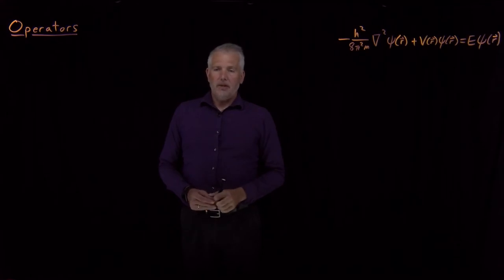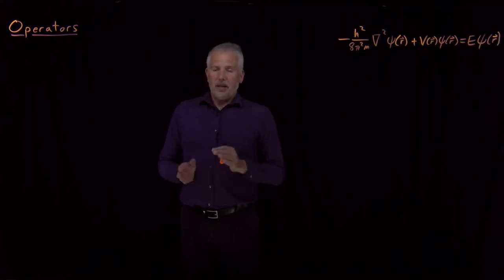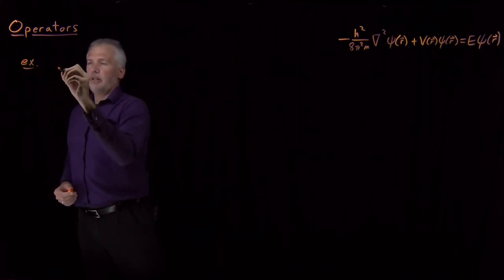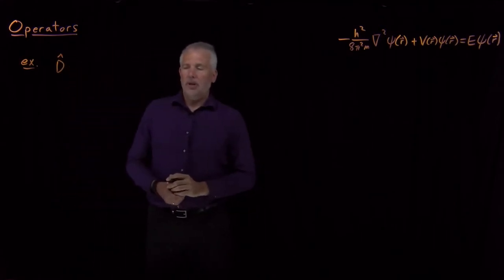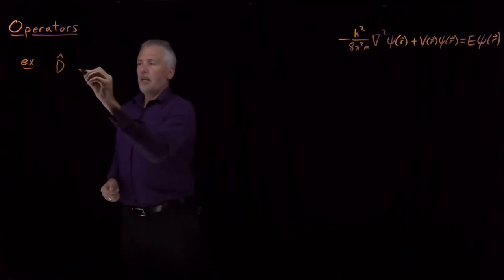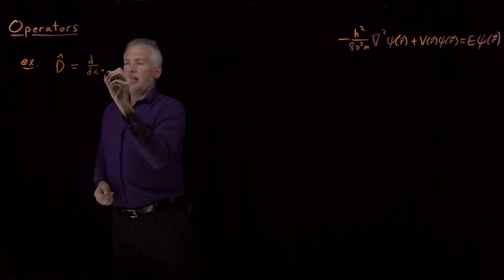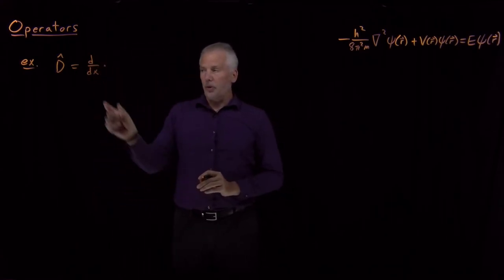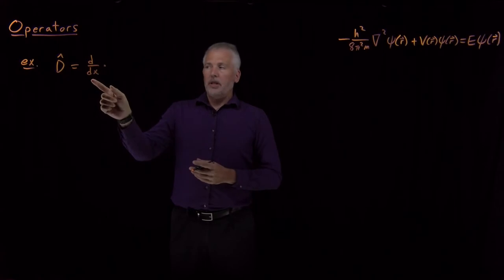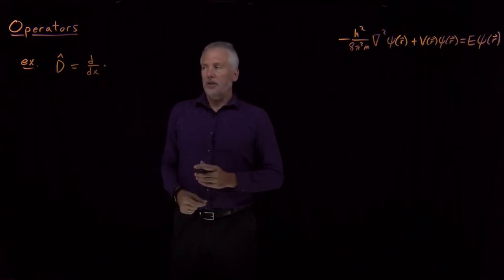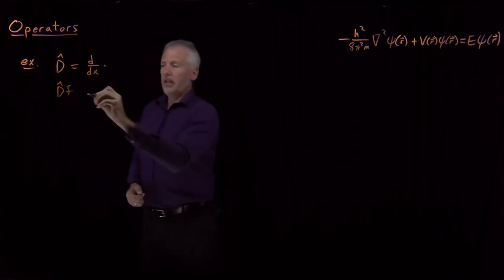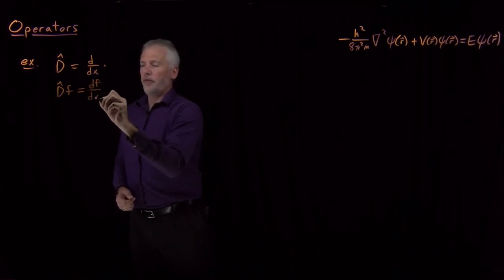An operator is just a mathematical action that acts upon something else — operates upon something else. For example, I can define an operator. I'll call it the D operator, and we'll often use a hat to describe an operator, so D-hat means the operator called D. This operator D is the take-the-first-derivative operator. A derivative is an action that doesn't mean anything by itself — I can't tell you what the derivative is until you tell me what you want to take the derivative of. So it acts upon some function, and the derivative operator acting on some function gives me the derivative of that function.